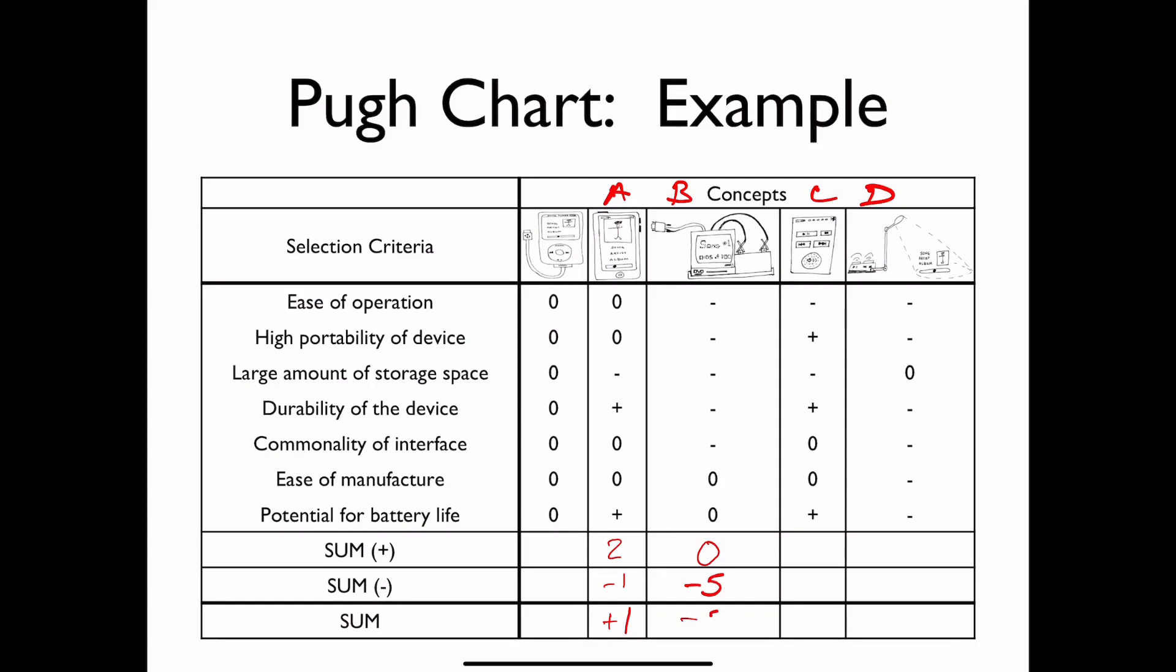For concept C, there were three positive and two negative for a score of plus one. And for concept D, there were really no positive aspects of this, but then six negative aspects relative to the datum.